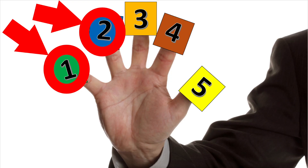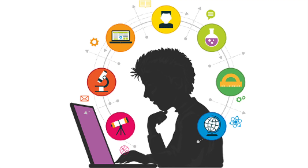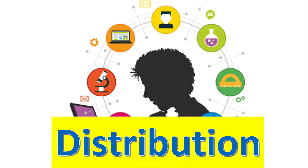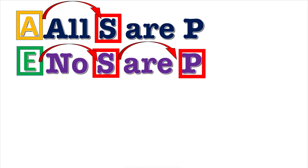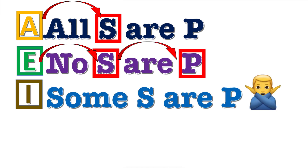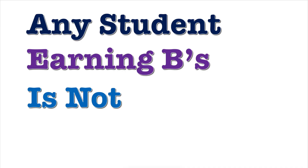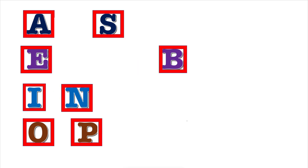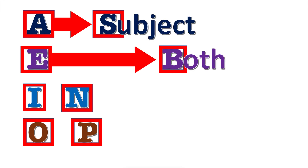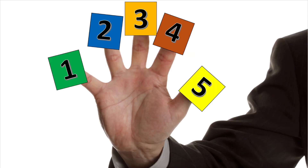For the first two rules, you'll need to know about distribution. See video number 54 in this playlist for more information. In short, A propositions distribute the subject; E propositions distribute both the subject and the predicate; I propositions distribute neither term; and O propositions distribute the predicate. Remember this memory aid: 'Any student earning B's is not on probation.' This helps you remember the terms distributed by A, E, I, and O propositions.